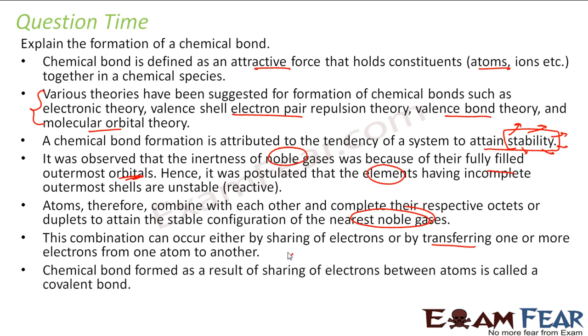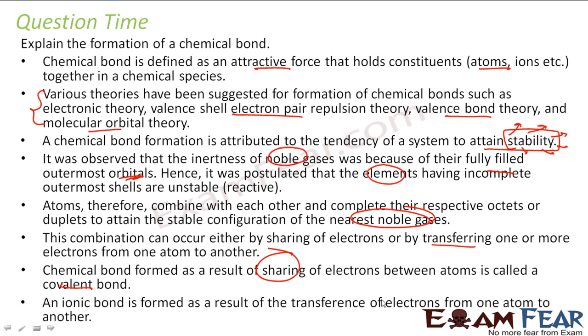So when it shares electrons it is called covalent bond. And when it transfers electrons it is called ionic bond. That's the whole story about bond. So there are various theories but the main theory is about the stability, to attain stability. To attain stability either they sometimes transfer electrons or sometimes share electrons.